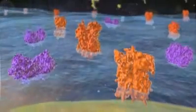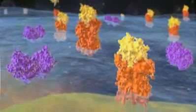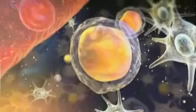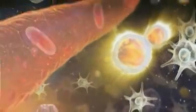As SDF1 interacts with CXCR4, it creates a bond which signals the stem cells inside the bone marrow to crawl toward the stromal and osteoblast cells.